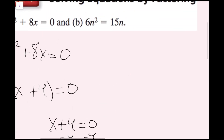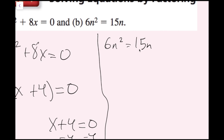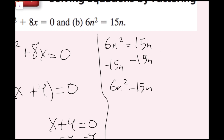For part B, I have 6n squared equals 15n. We never want to divide by a variable — we'd rather factor because we might miss values. So I subtract 15n on both sides to get 6n squared minus 15n equals zero. Now I can find the greatest common factor. I can factor out 3 from 6 and 15, and n from n and n squared, giving 3n times the quantity 2n minus 5 equals zero.